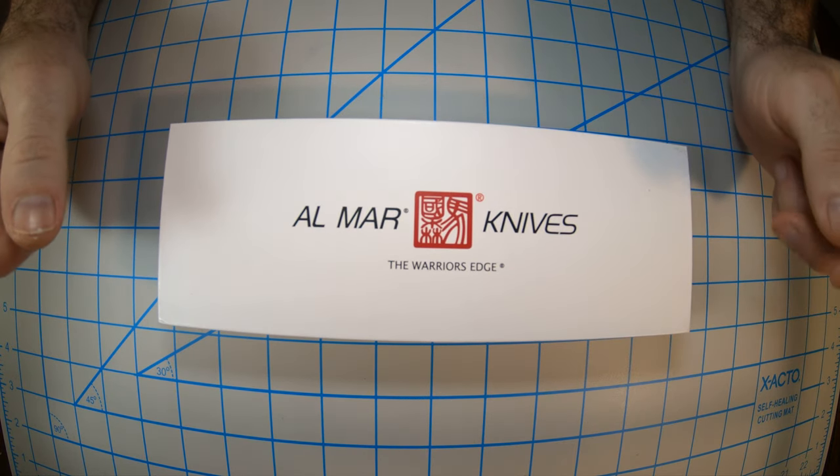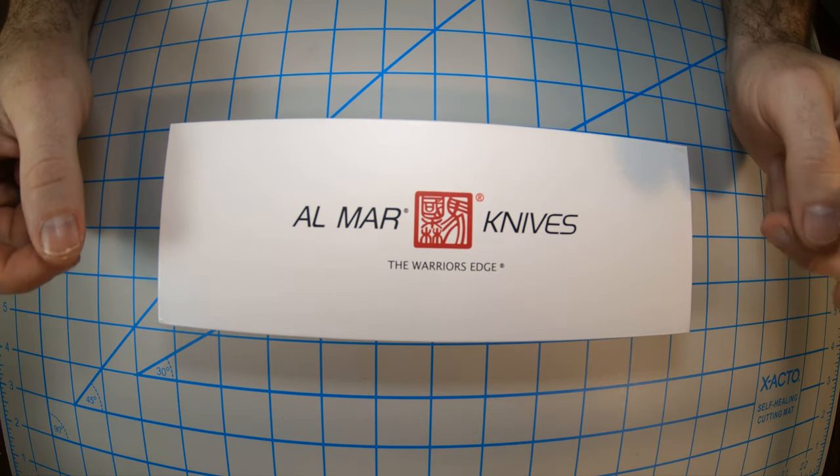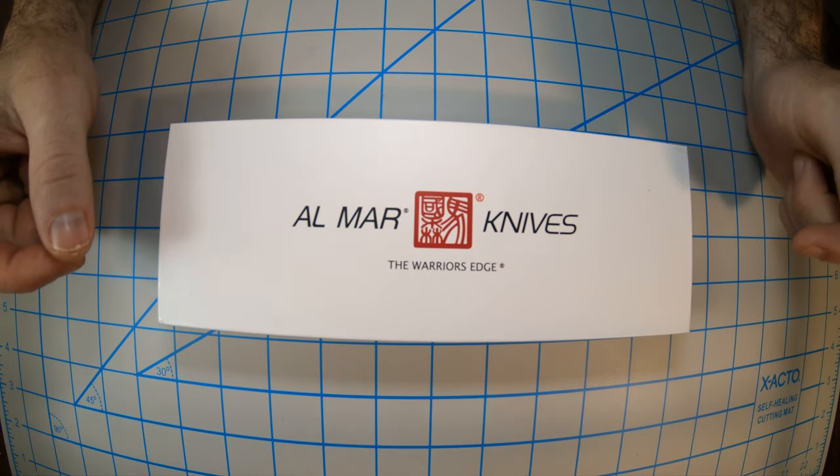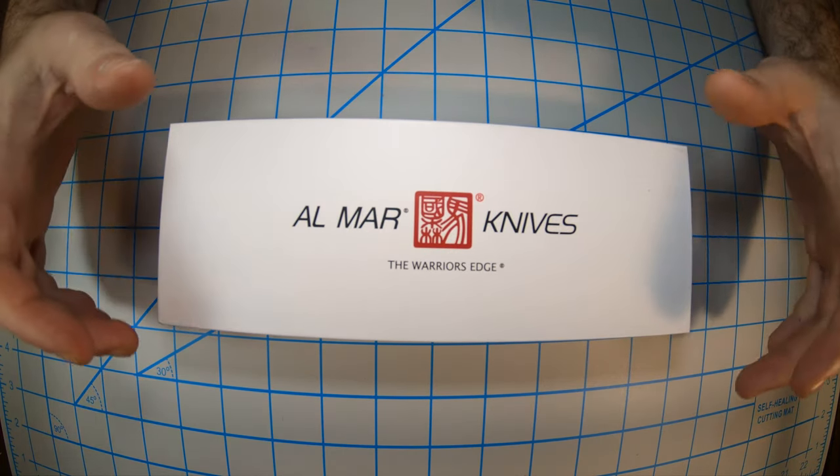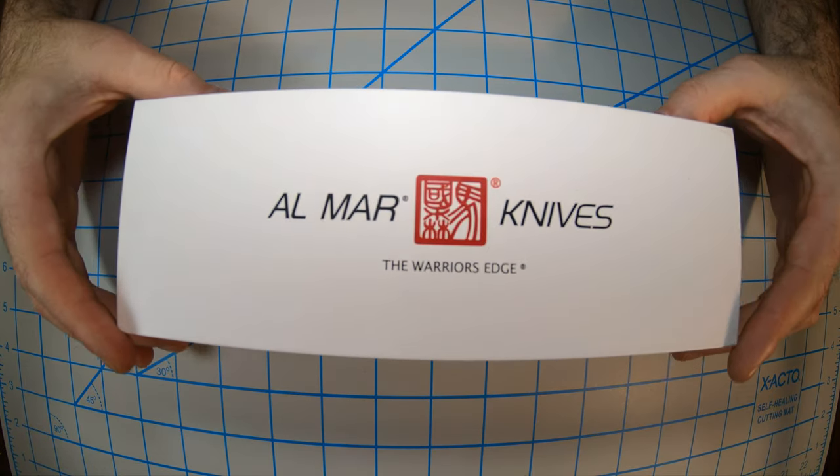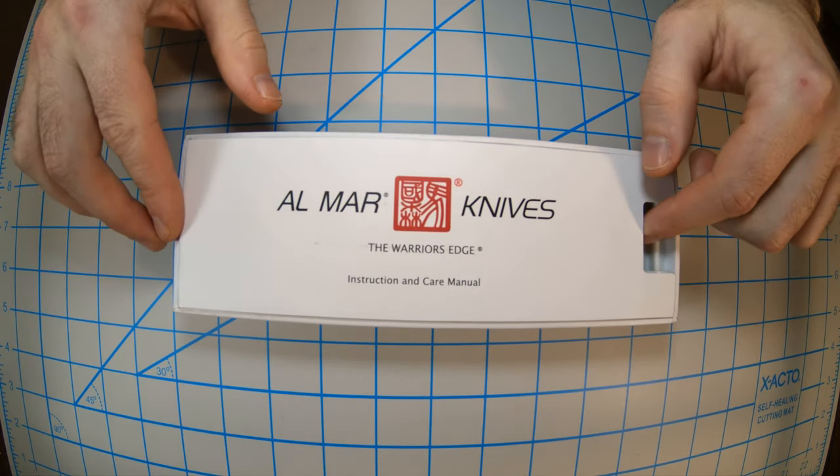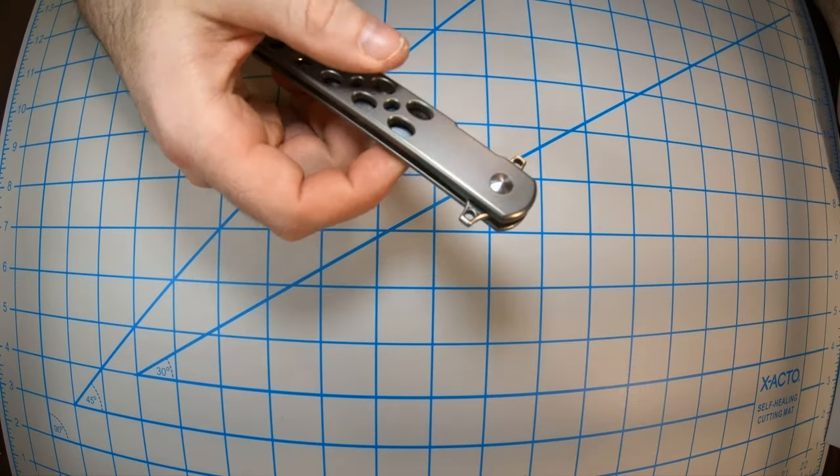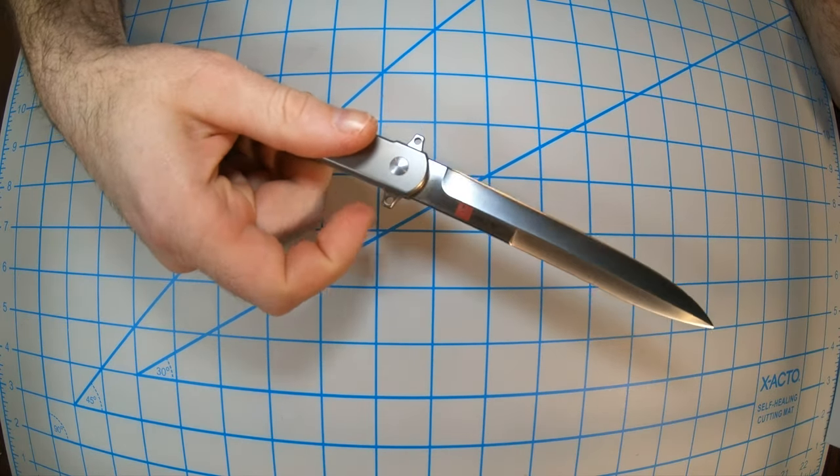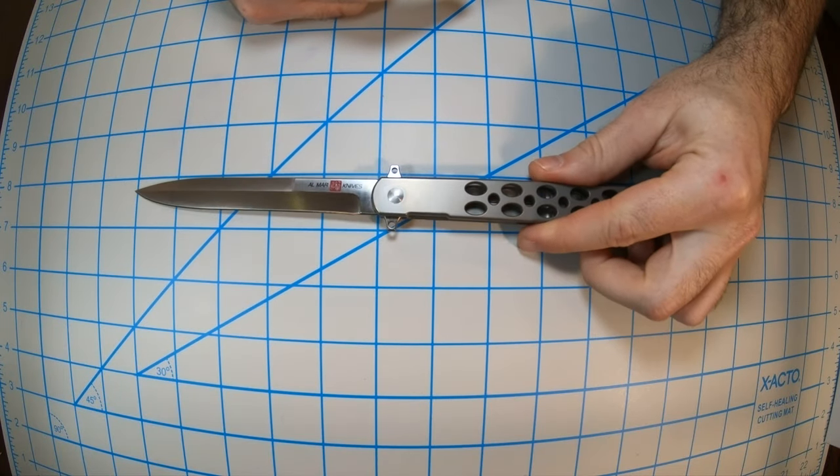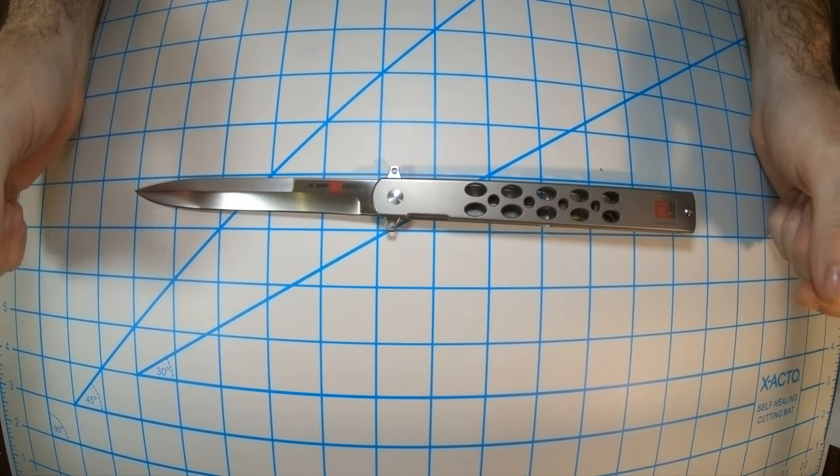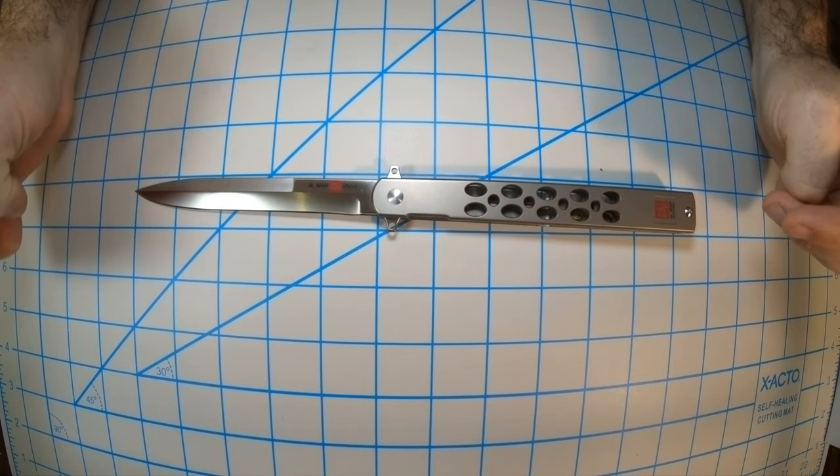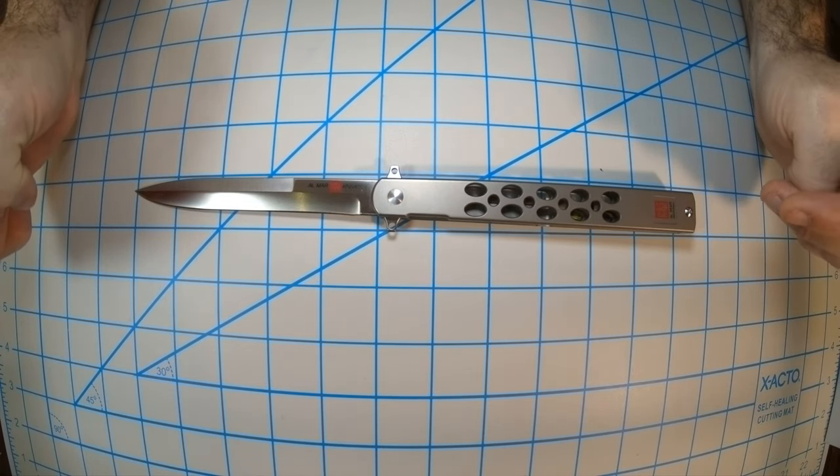Hi, today we will do the unboxing of the Almar Slimline Ultralight Quicksilver, model number 4046. So let's open it. There you go. It's a stiletto style knife, a very long folding knife. It flips open.